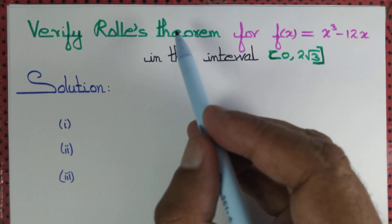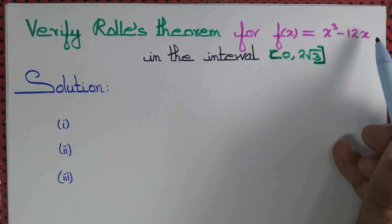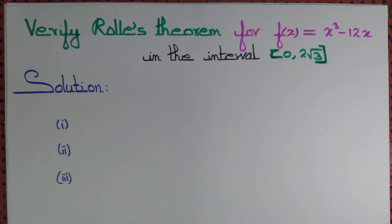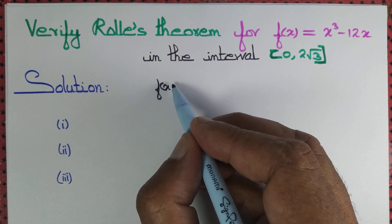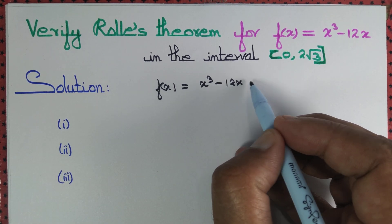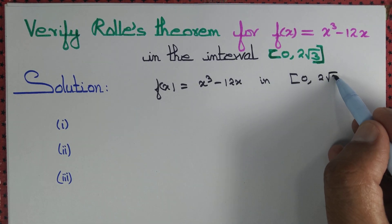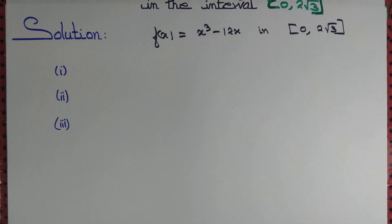Let us verify Rolle's theorem for f(x) equal to x cubed minus 12x in the interval [0, 2√3]. To verify Rolle's theorem, first of all we should make sure that three criteria are satisfied. Let us deal with those criteria one by one.